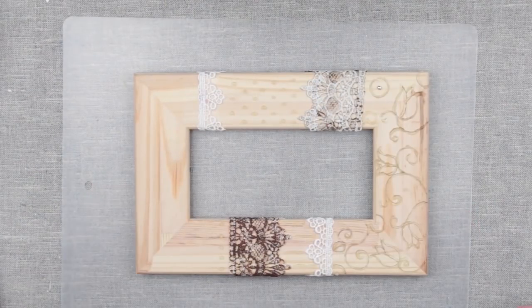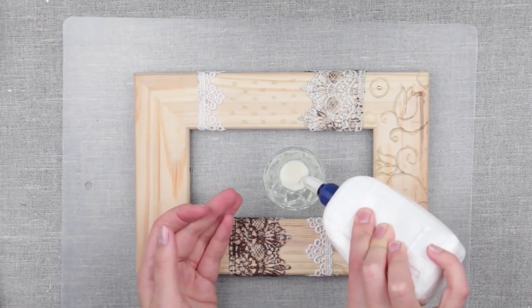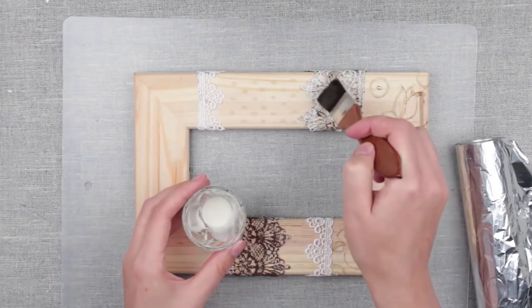We can start attaching foil with white glue. Add some glue with a brush. Cover the lace and hot glue pattern brushing thoroughly.